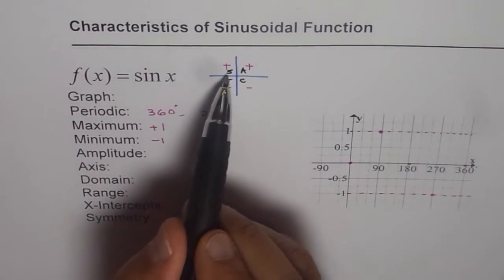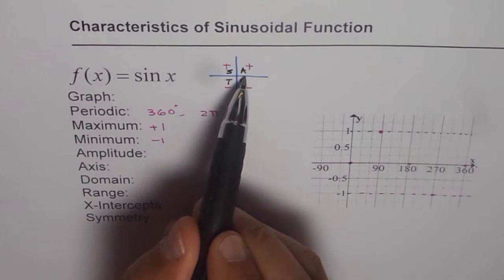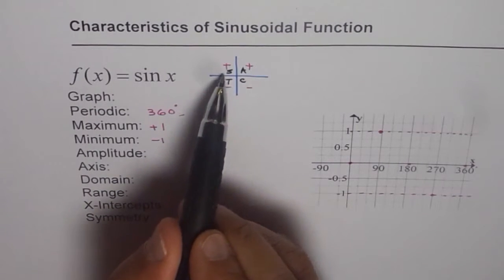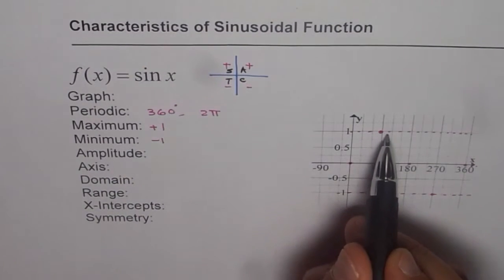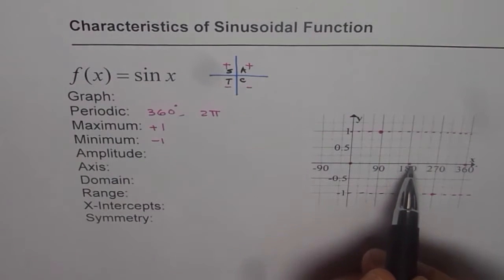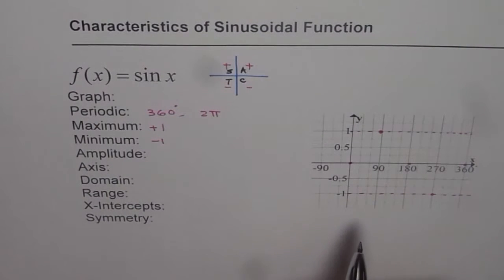When we say quadrant 1 and 2 that means in degrees it translates to from 0 to 180. So in the first half, sin is positive and in the later half, sin is negative.